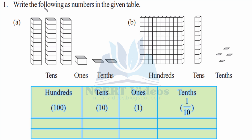Question 1: Write the following as numbers in the given table. We have different figures representing different units of a number, so we have to write them into the corresponding table — tens below tens, ones below ones. In the first question we have three tens, three pillars, one ones. Writing the corresponding values: in the tens we have two tens. In hundreds we write zero.